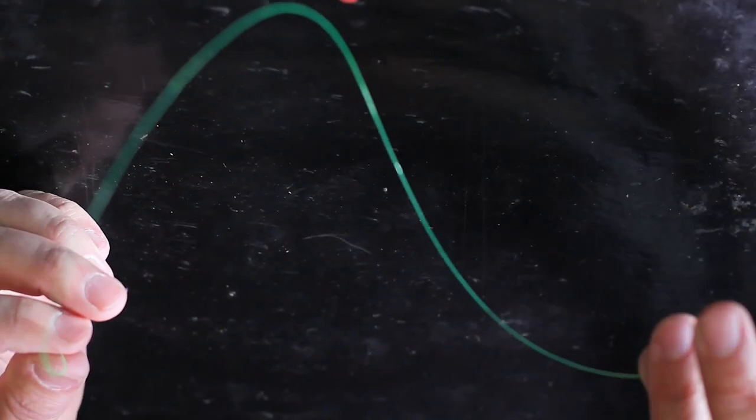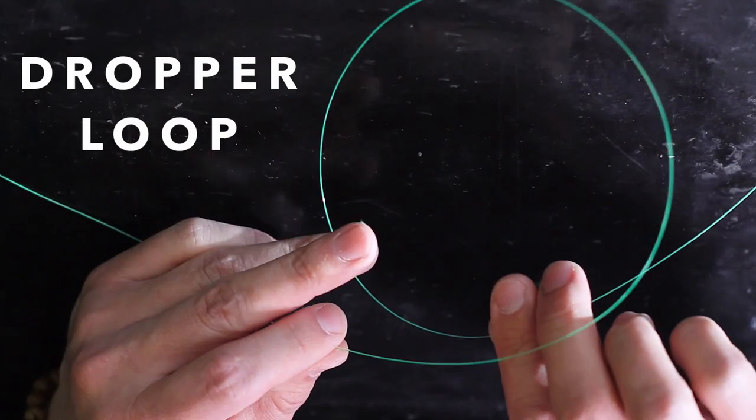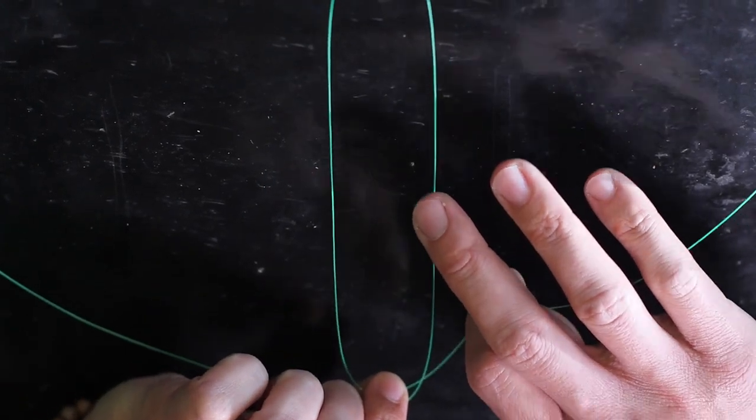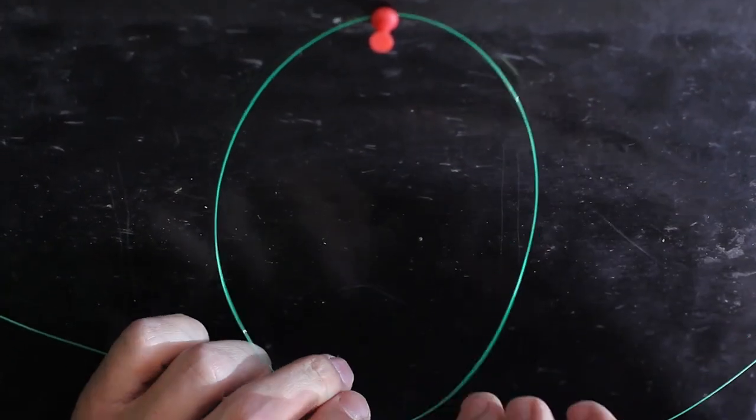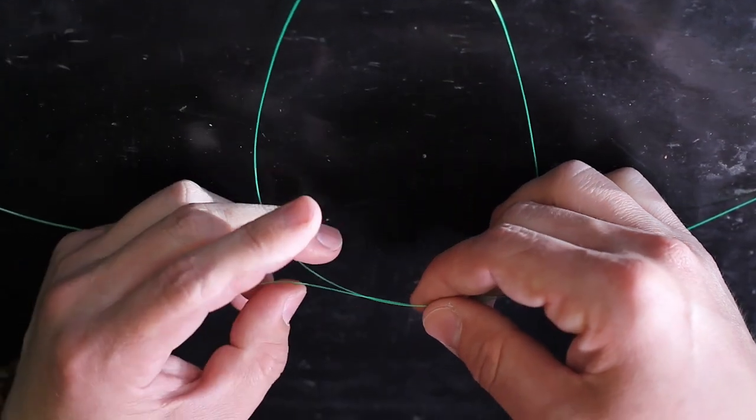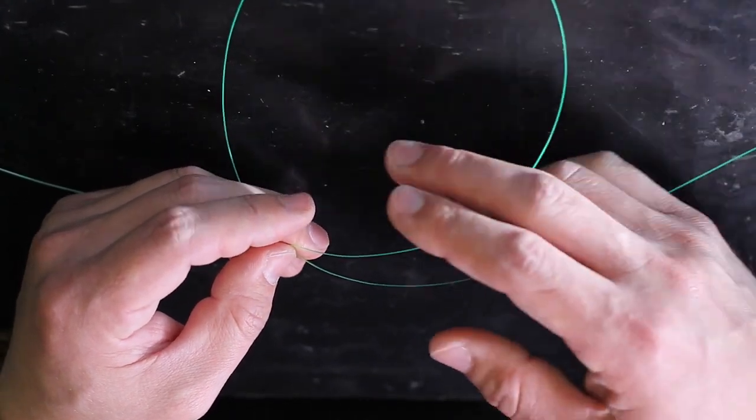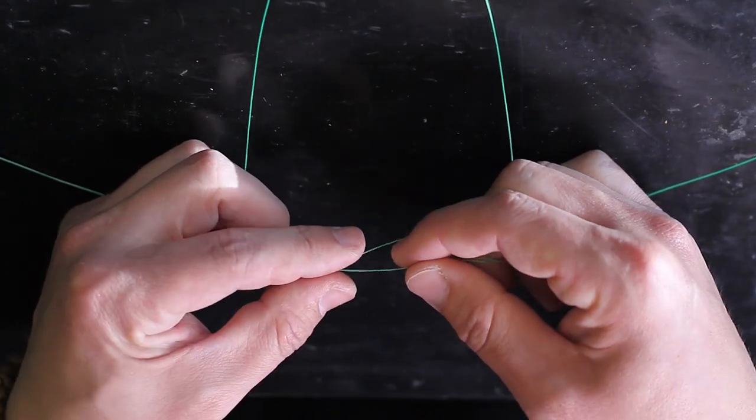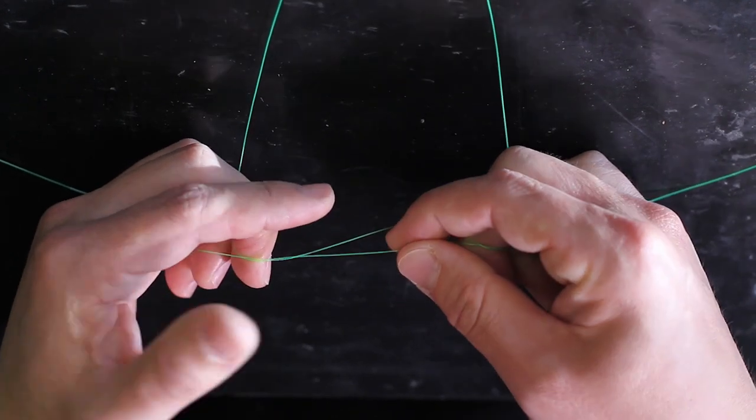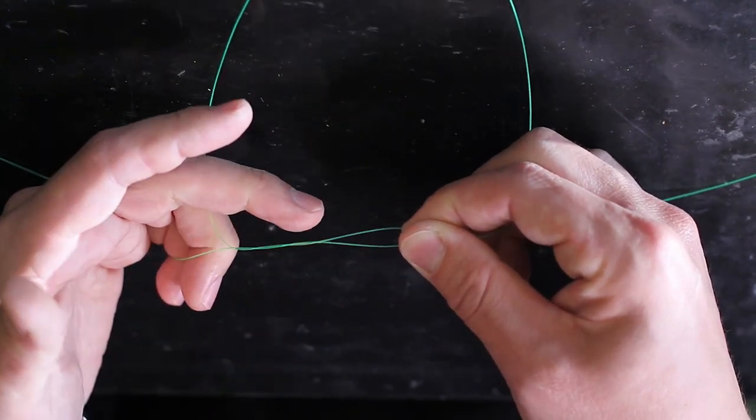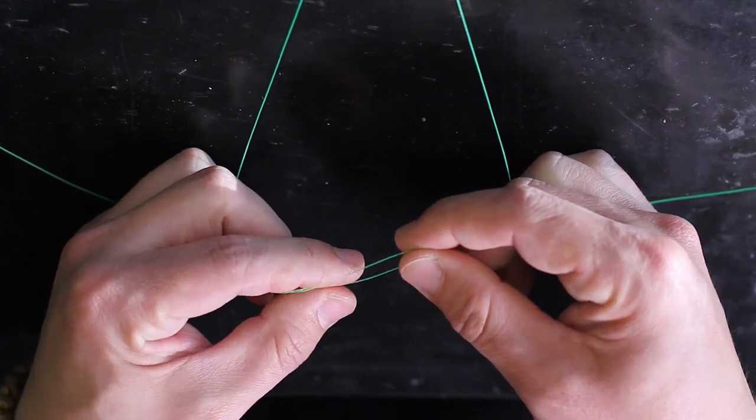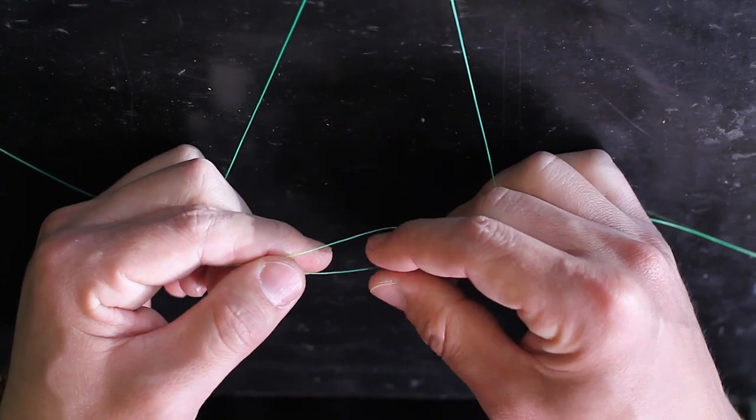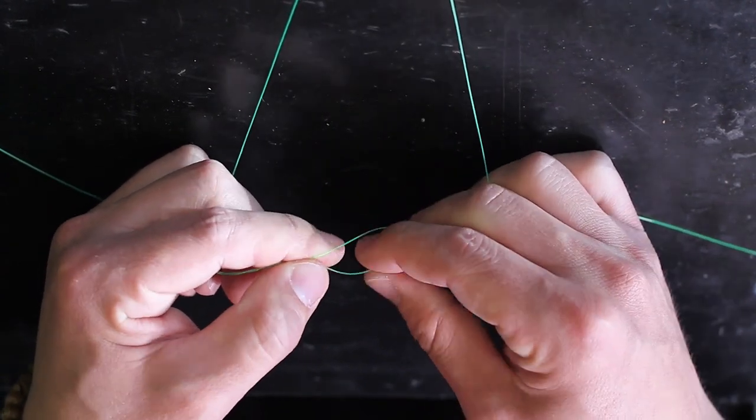So the high-low rig, first knot we're going to do is a dropper loop. Usually like this size, which is probably seven to eight inches long. Grab it with both hands, with your fingers, and spin it around about eight times. So we got four, five, six, seven, eight.